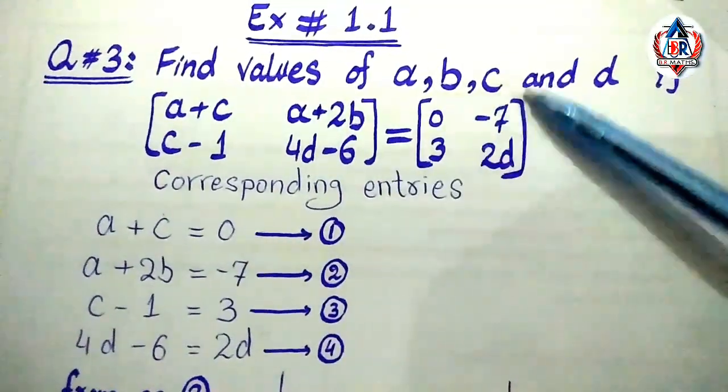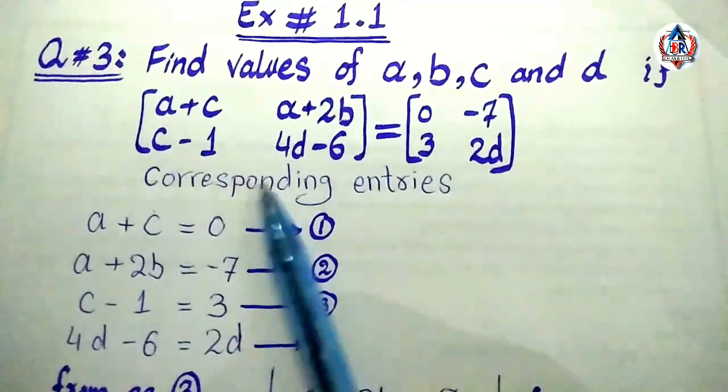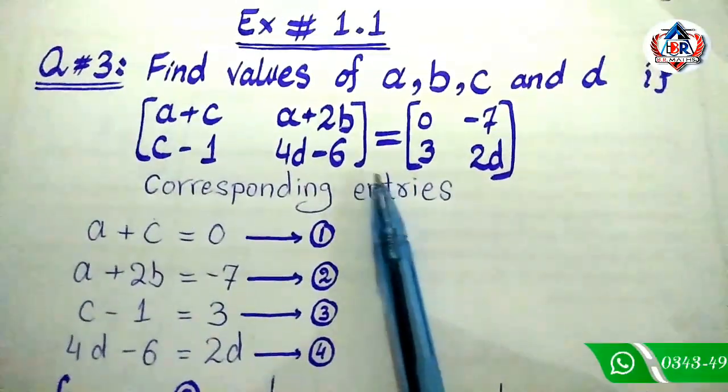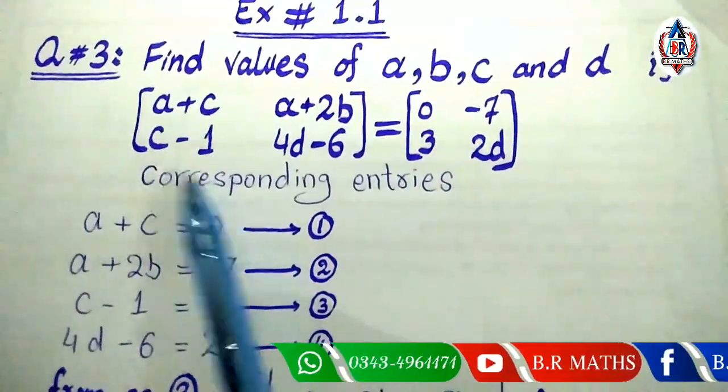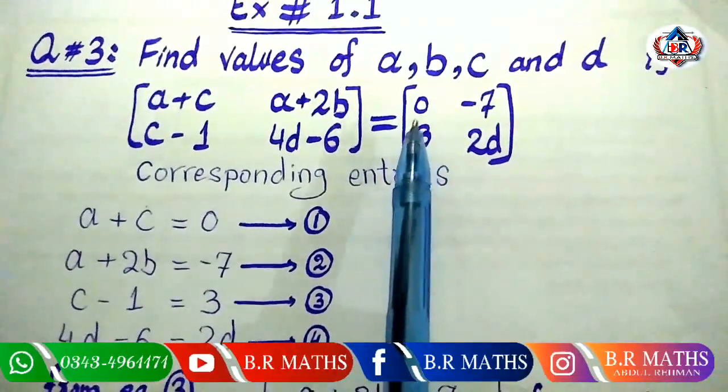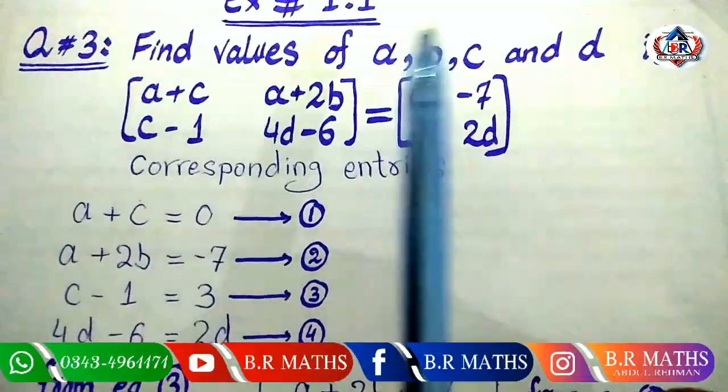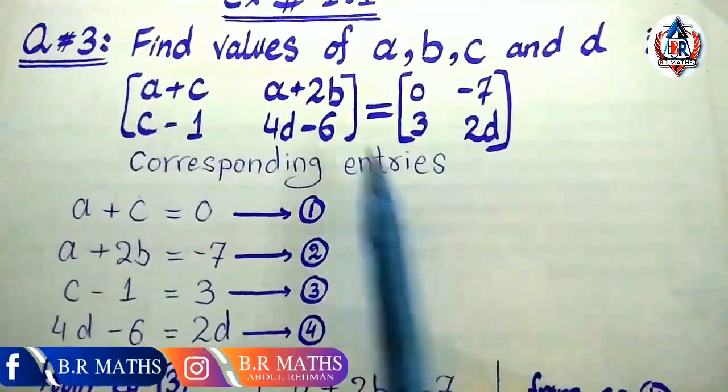Find the value of a, b, c and d if both matrices are equal. According to the condition of equal matrices, the corresponding entries are the same. So the corresponding entries give us: a plus c equals 0, a plus 2b equals minus 7, c minus 1 equals 3, and 4d minus 6 equals 2d.